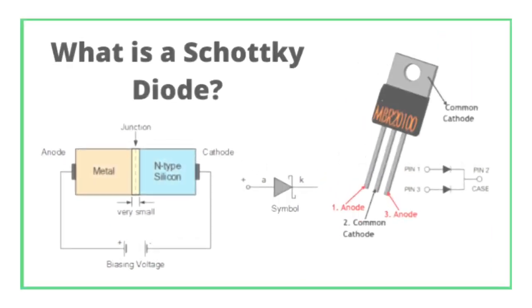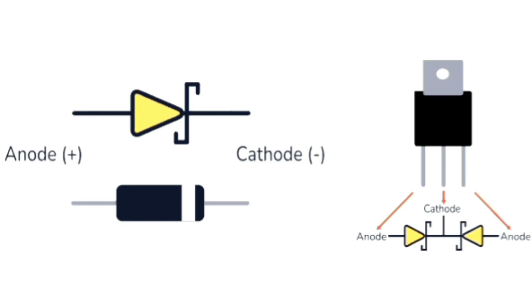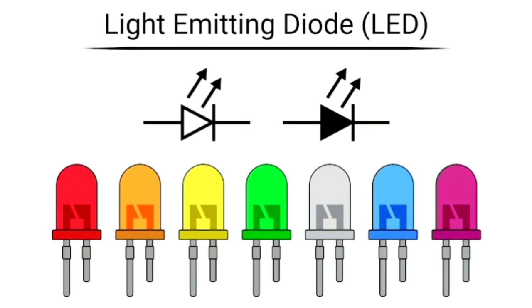Schottky diodes are known for their fast switching speeds and low forward voltage drop, making them suitable for high frequency and low power applications. LEDs emit light when forward biased and find applications in lighting, displays, and indicators. Understanding diode behavior in different biasing conditions is fundamental for designing and analyzing electronic circuits effectively.